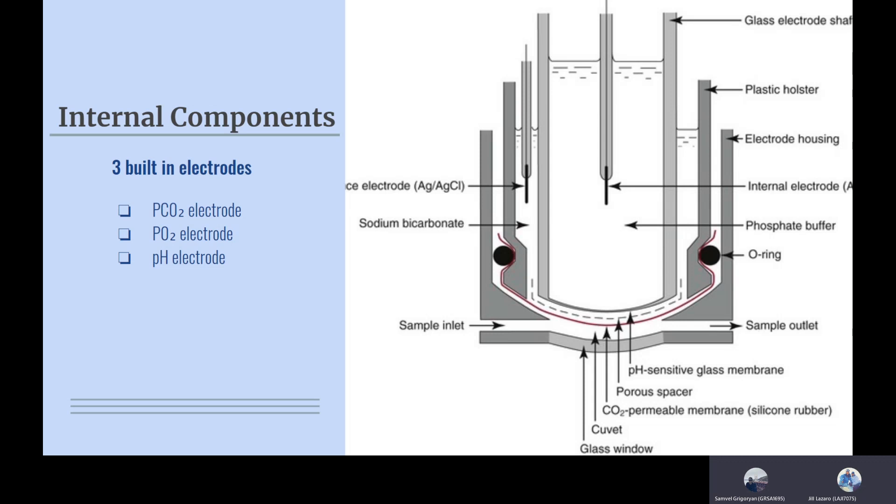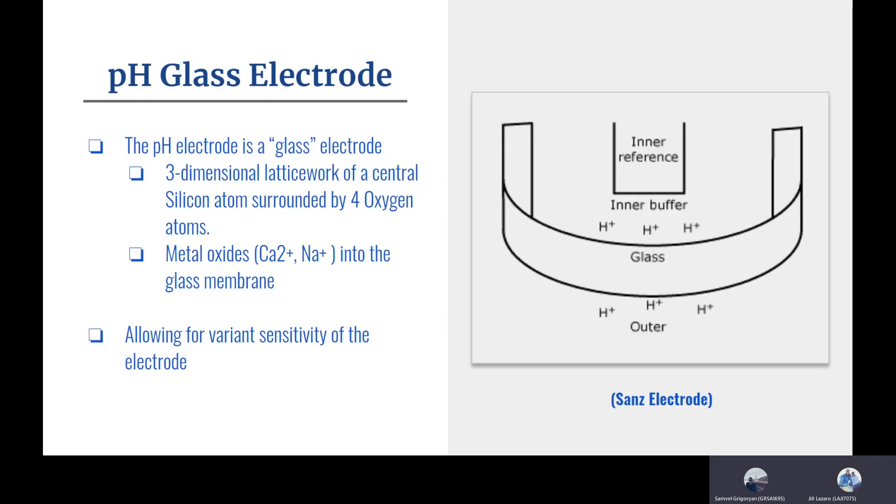The first one is the pH electrode. The pH electrode is a glass-like structure, a three-dimensional latticework of central silicon atom with four oxygen atoms. When the metal is oxidized into the glass membrane, it measures how much oxygen has gone through, and that's how the sensor calculates the pH of the sample.